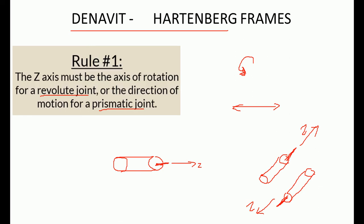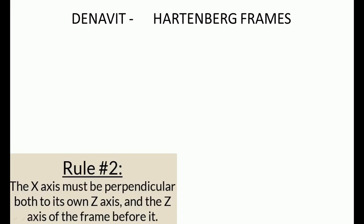The second rule states that whenever we are going to create the X axis, that X axis must be perpendicular to the present frame's Z axis and also perpendicular to the previous frame's Z axis. For example, suppose a motor is placed with the shaft here — as per the first rule the Z axis lies here, so the X axis must be perpendicular to this Z axis.